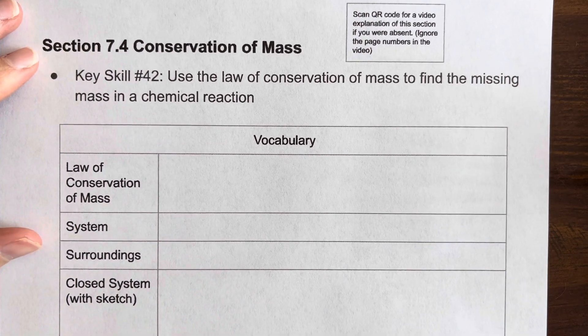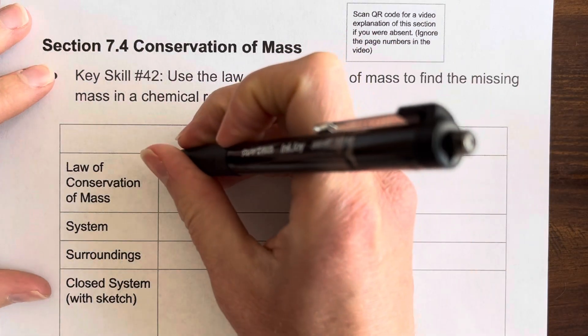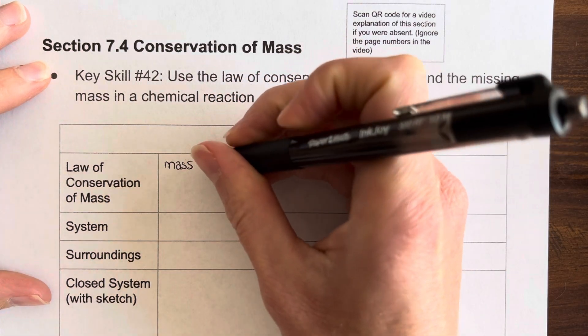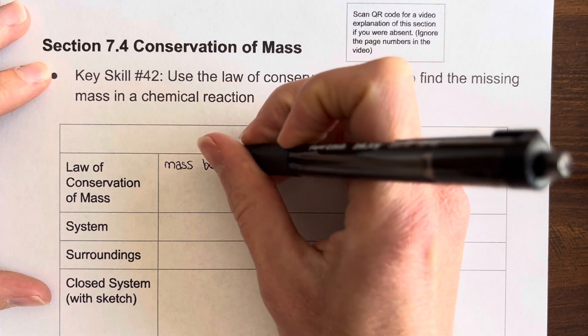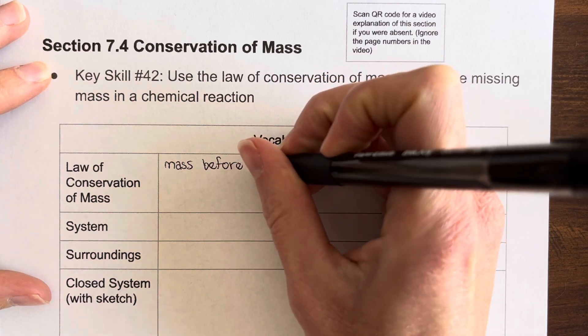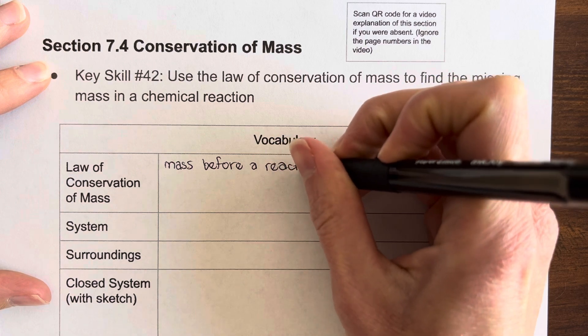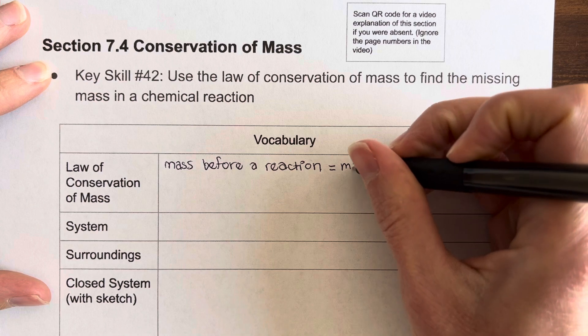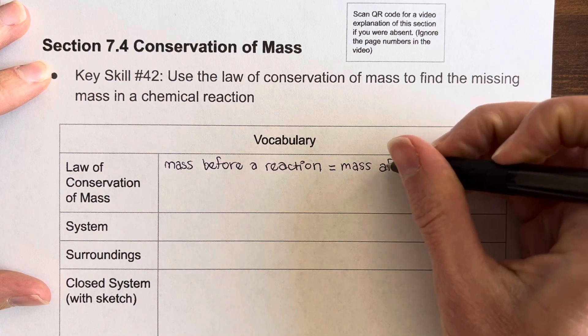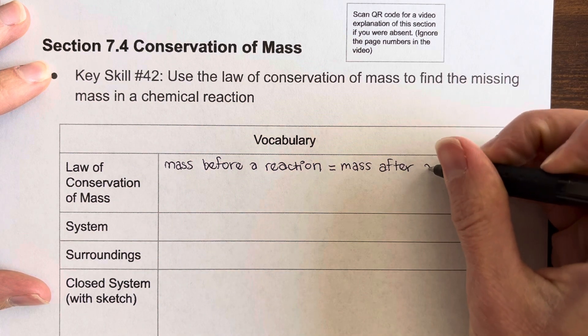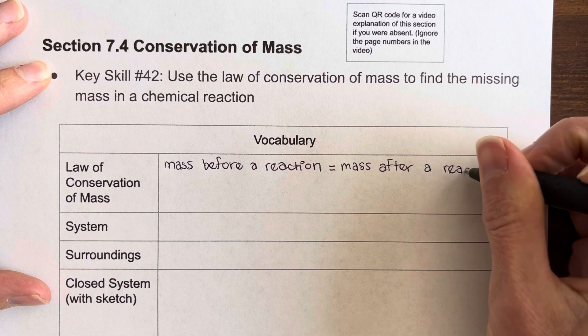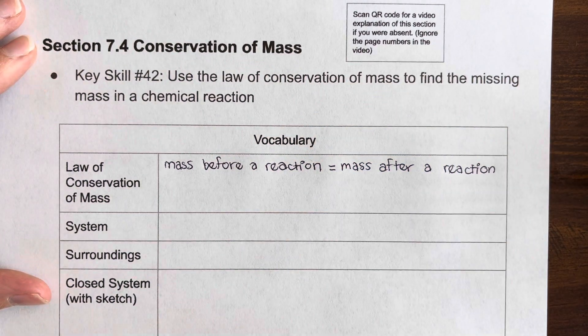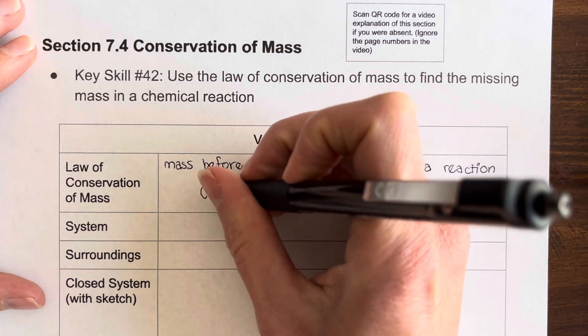But just as a review, the law of conservation of mass tells us that the mass of chemicals before a reaction occurs has to be equal to the mass after the reaction has happened. Or another way of stating the law of conservation of mass is to say that atoms can't be created or destroyed.